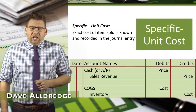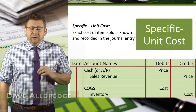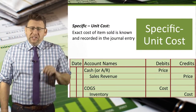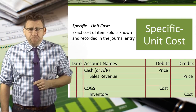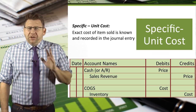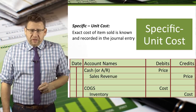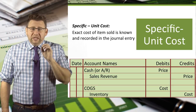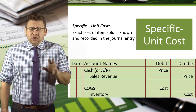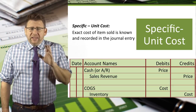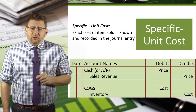In this example I want to cover how to value inventory using specific unit costing. We make no cost flow assumptions with this method, so you are going to be given the exact items sold and the exact items remaining in inventory.